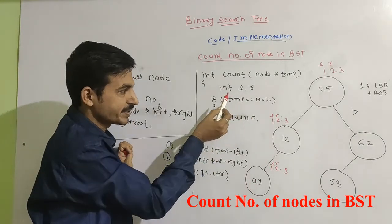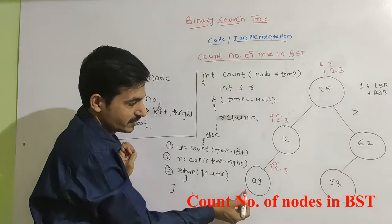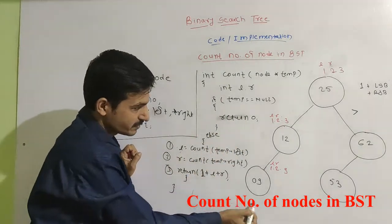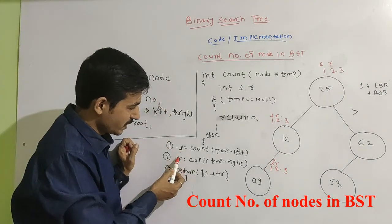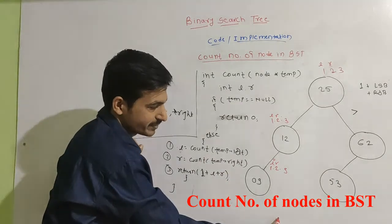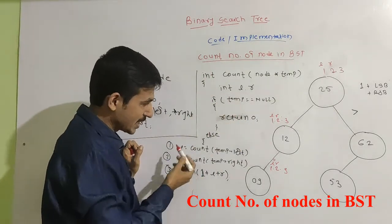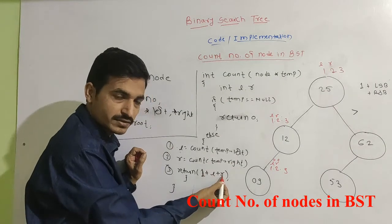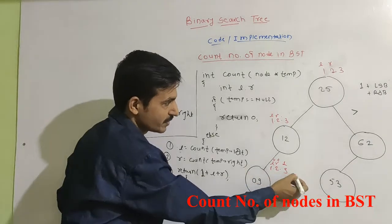Now temp is not null, so it enters the else part again. L equals count(temp->left), and it goes to temp->left. The function is called again. Now temp->left is null, so it returns 0. L is stored as 0. Coming to the next line, R is executed: R equals count(temp->right). It goes to temp->right — it is also null — so the function returns 0. R is also 0. Then line 3 executes: return 1 plus L plus R, which is 0 plus 0 plus 1, returning 1.